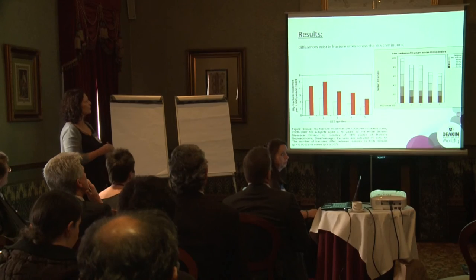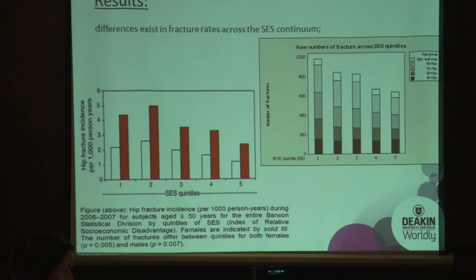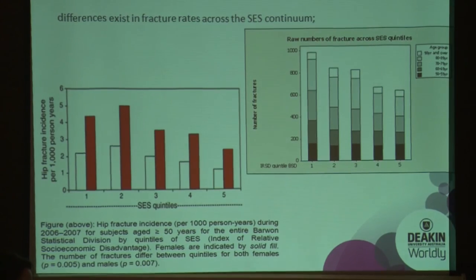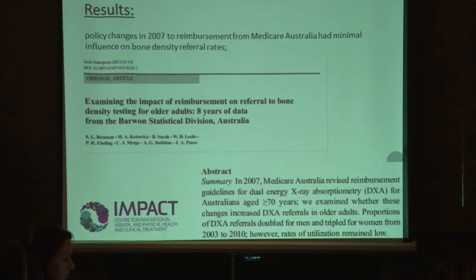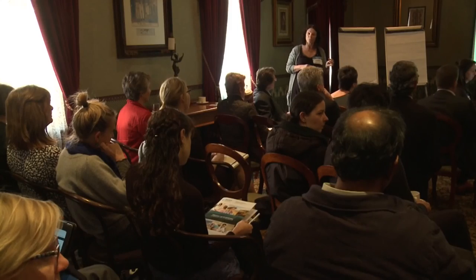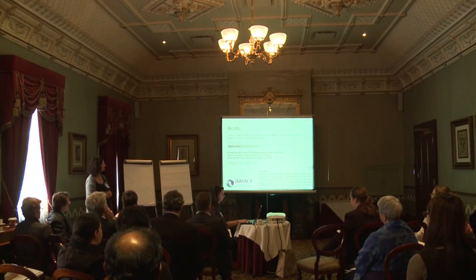We also found differences in fracture rates across the SES continuum — there is a social gradient in musculoskeletal disorders, including hip fracture incidence. Looking at policy: Medicare Australia in 2007 introduced changes to reimbursement for DEXA, but it didn't have much impact — uptake before and after didn't really change, which is disappointing. Similarly, for joint replacement, there is a clear social gradient.